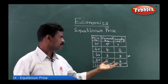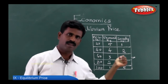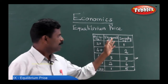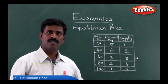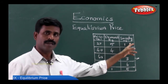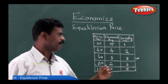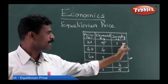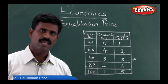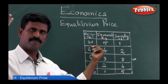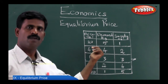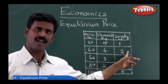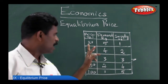For example, when the price of mango is rupees 20, the demand will be 5 kg, but the supplier will be ready to sell only 1 kg because the price is less. When the price goes up to rupees 40, the demand comes down, but the supplier is ready to sell 2 kgs at rupees 40.